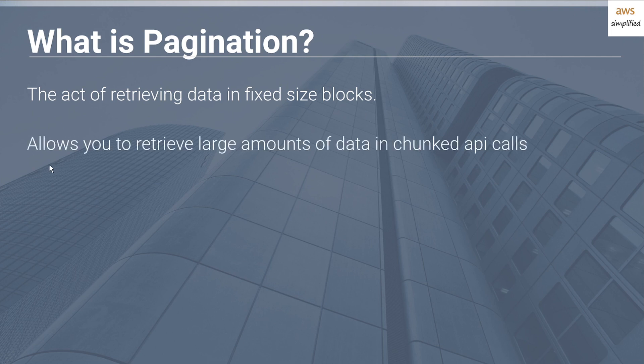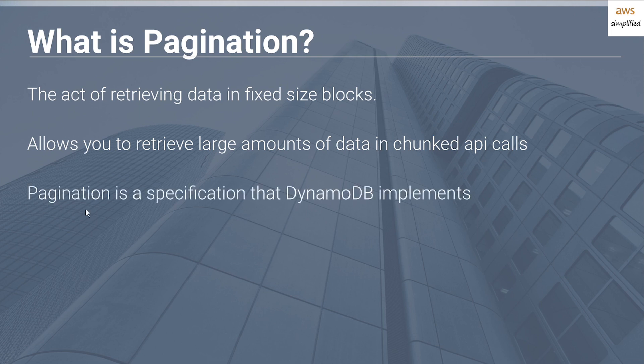In the context of DynamoDB, it allows you to retrieve large amounts of data in chunked API calls — individual API calls where you specify how many records you want and you'll get that many records back, provided they exist. Pagination isn't something special to DynamoDB; it's a specification that DynamoDB implements. Whether you're working with a traditional SQL database, a NoSQL database, or any data retrieval mechanism, pagination is always going to be a concern because you can't get all your data in one call.